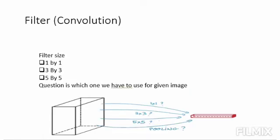Which one do we have to use for a given image? This is really a big question mark. Because of this huge variation in the location of information, choosing the right kernel size for the convolution operation becomes tough.